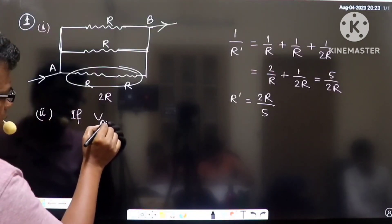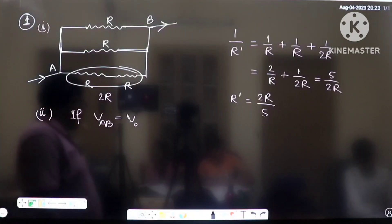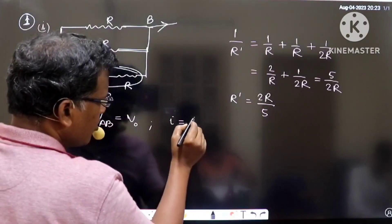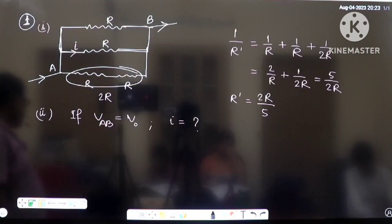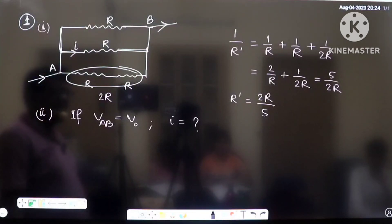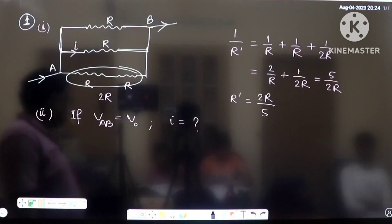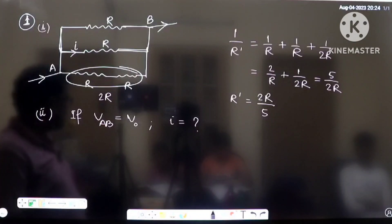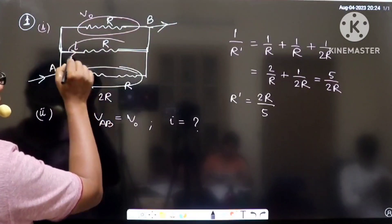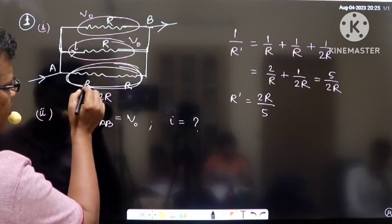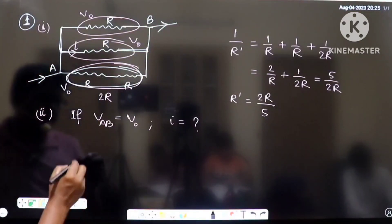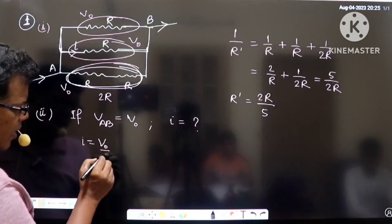If VAB equals V0, what is the value of current I as shown in the diagram? Since the potential difference between A and B is V0 and there are 3 parallel branches, each branch has the same potential difference V0 across it. So the current in the middle branch is V0 divided by the resistance in that branch.